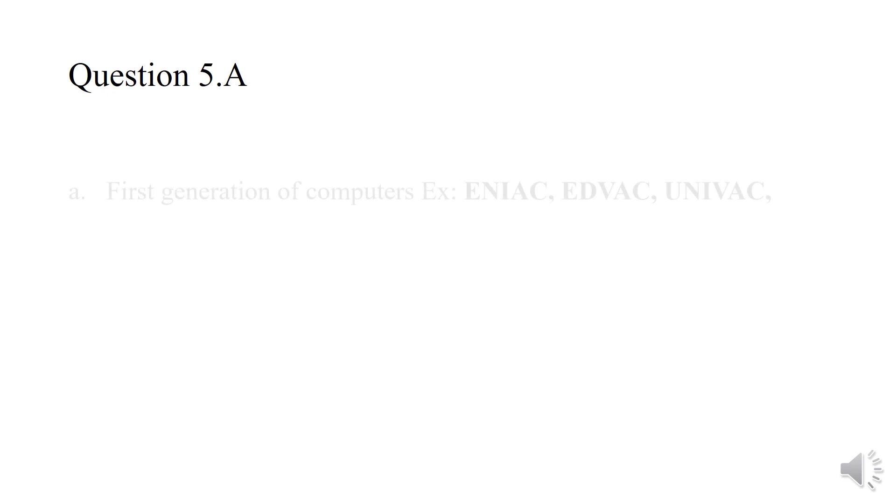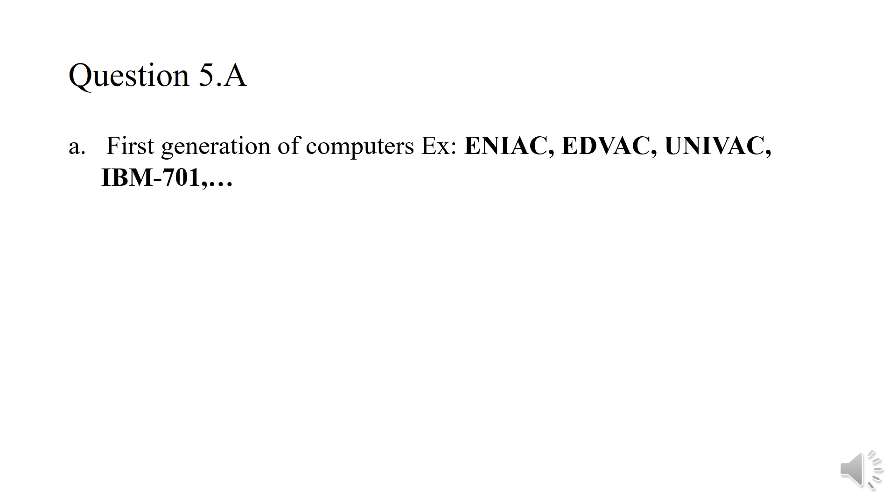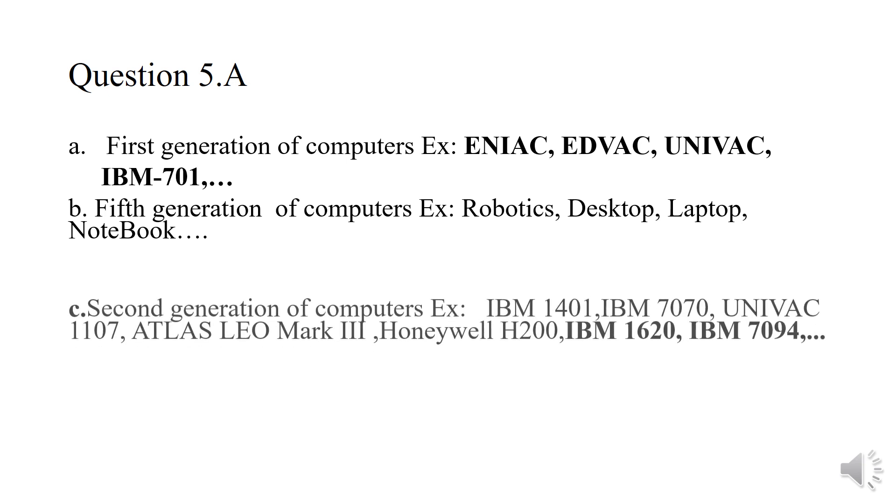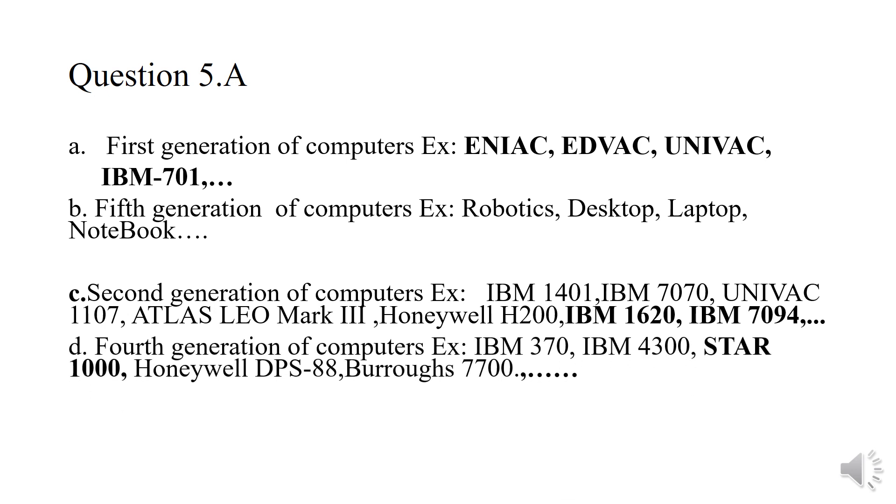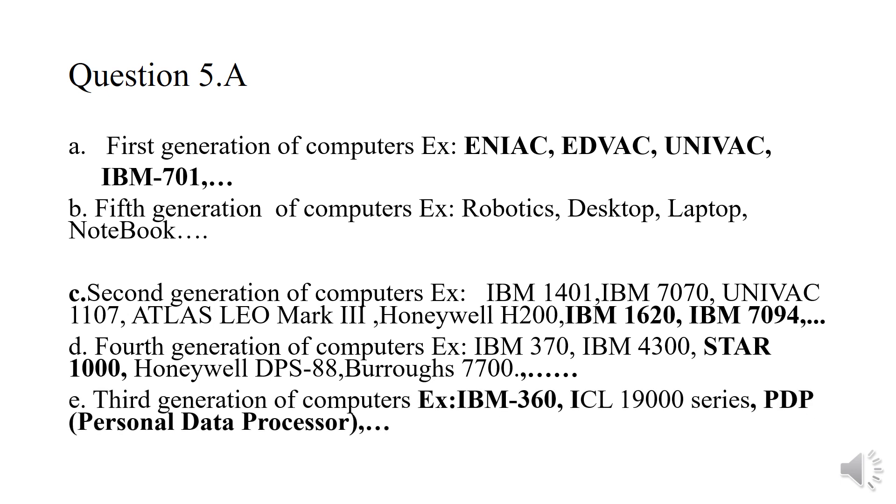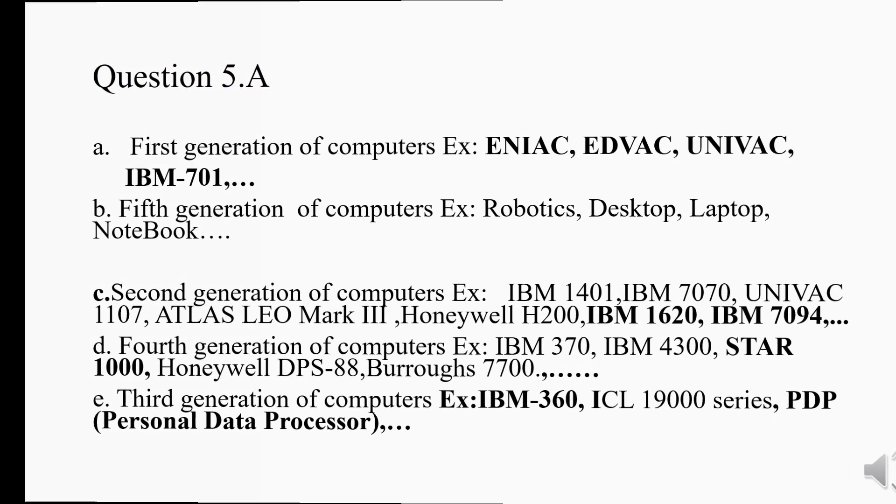Question number five. A. First generation of computers, we have examples like ENIAC, EDVAC, and so on. B. Fifth generation of computers, we have robotics, desktop, laptops, and so on. C. Second generation of computers, we have IBM 1401, IBM 7070, and so on. D. Fourth generation of computers: IBM 370, IBM 4300, and so on. E. Third generation of computers, we have examples like IBM 360, PDP, and so on.